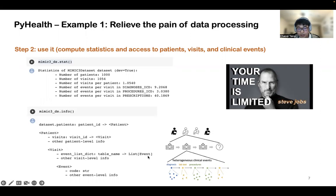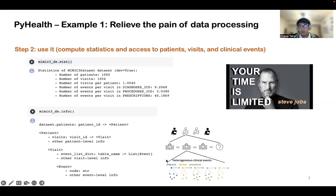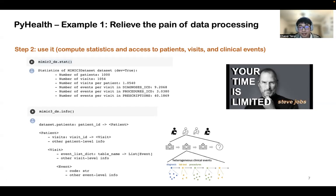Within each visit, we have several dictionaries mapped from the tables we used to process, and the actual events with respect to those tables. Each event object contains the code for that event and other event-level information. On the right-hand side I have shown a visual illustration of the whole structure: the top-level structure is different patients; within each patient we have different hospital visits; and within each hospital visit we list the events. This is the first example — our package can help relieve the pain of data processing.